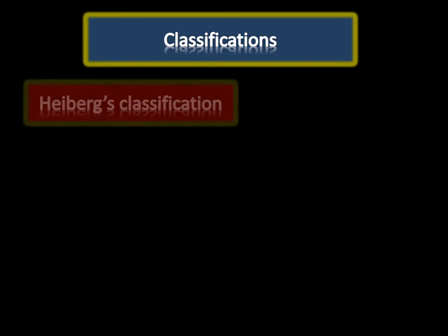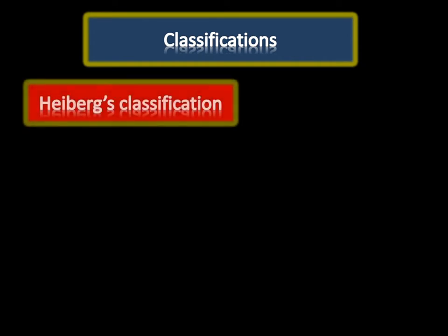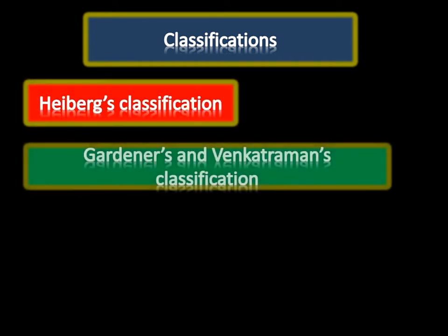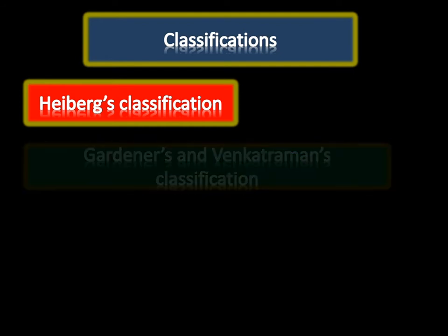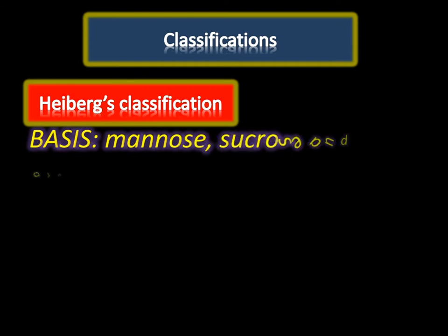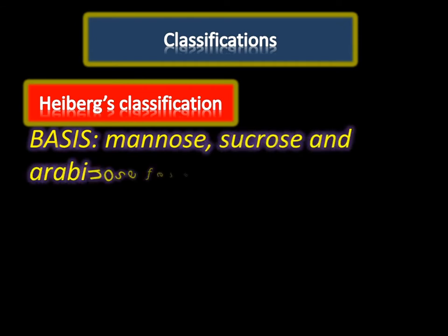To understand the laboratory diagnosis of Vibrio, we must know the classifications of Vibrio. There are two main classifications available: Heberg's classification and Gardner and Venkatraman classification.